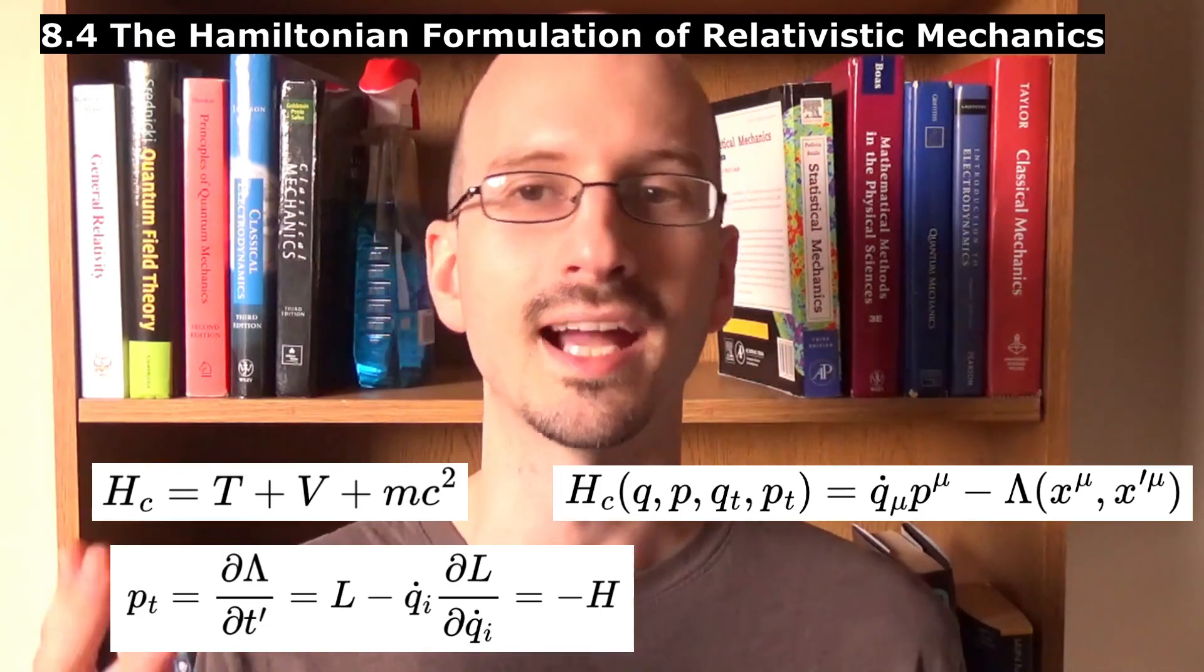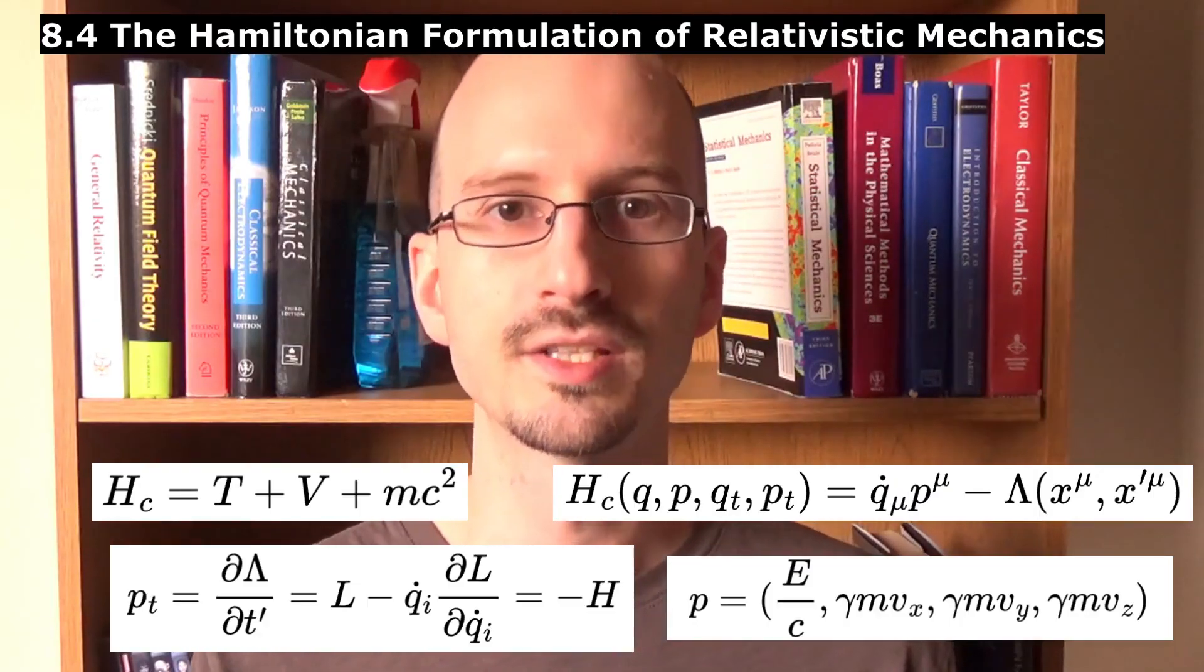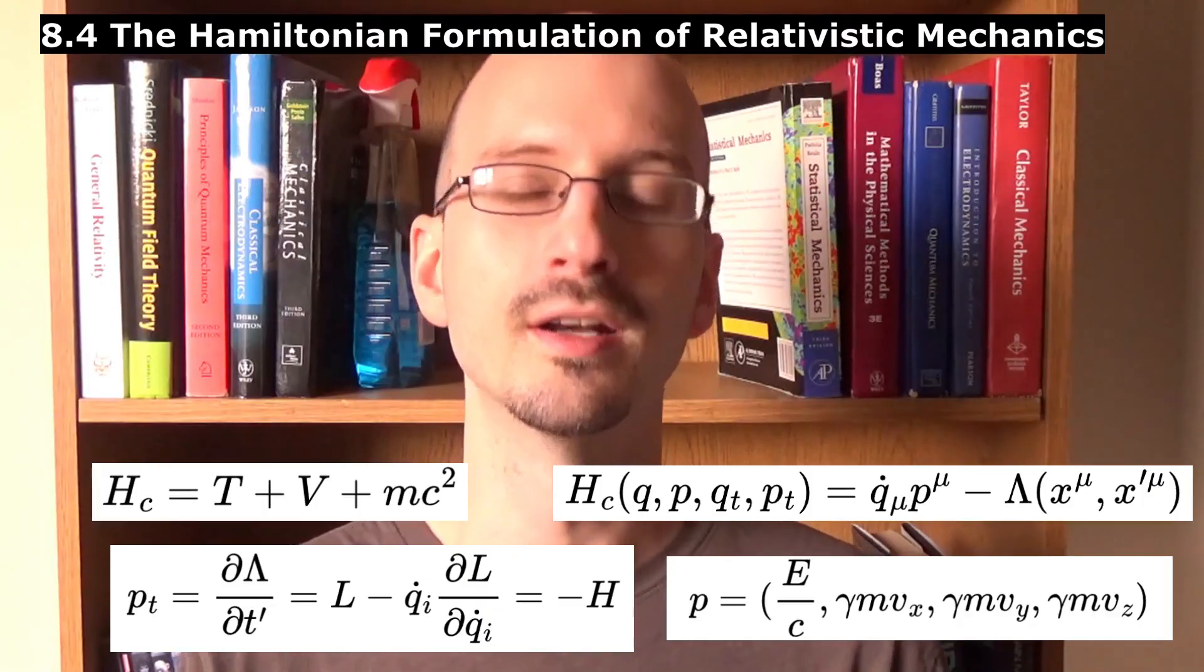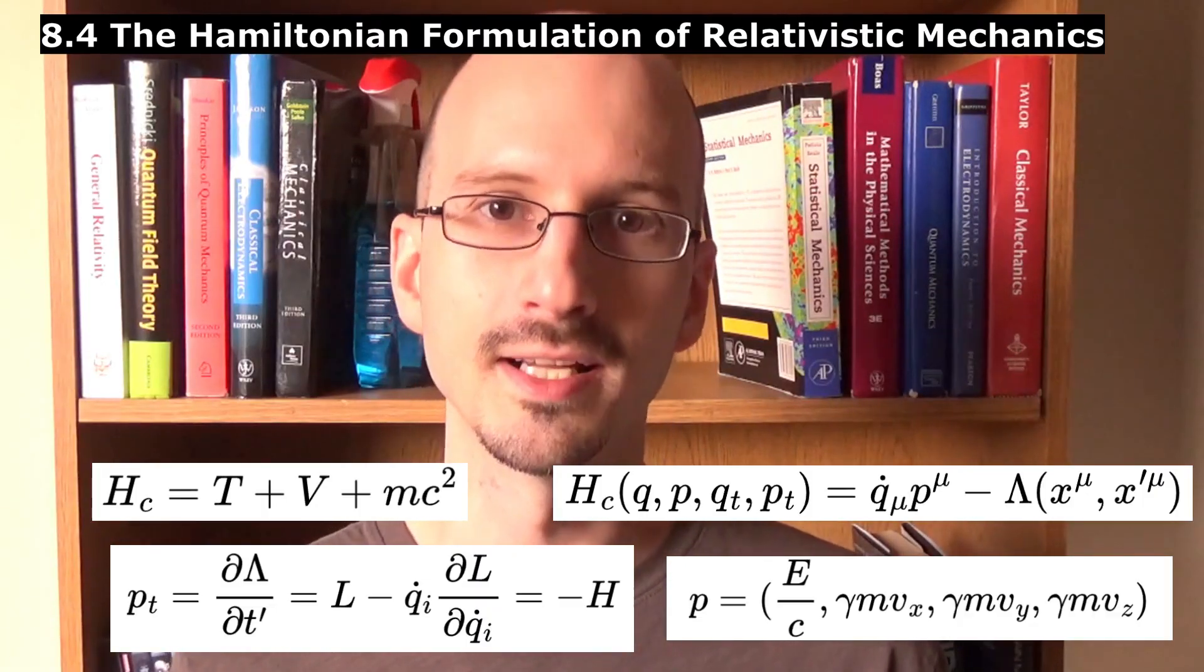And if the coordinate is multiplied by a constant, the conjugate momentum is divided by that constant, which gives us the familiar energy divided by the speed of light.